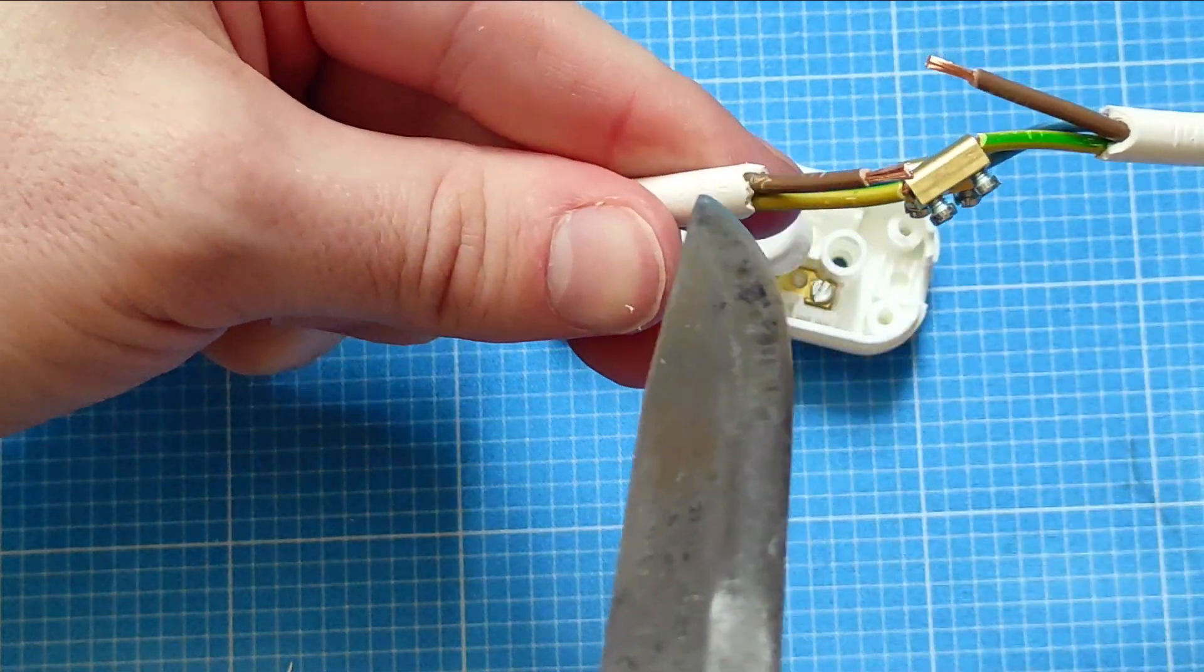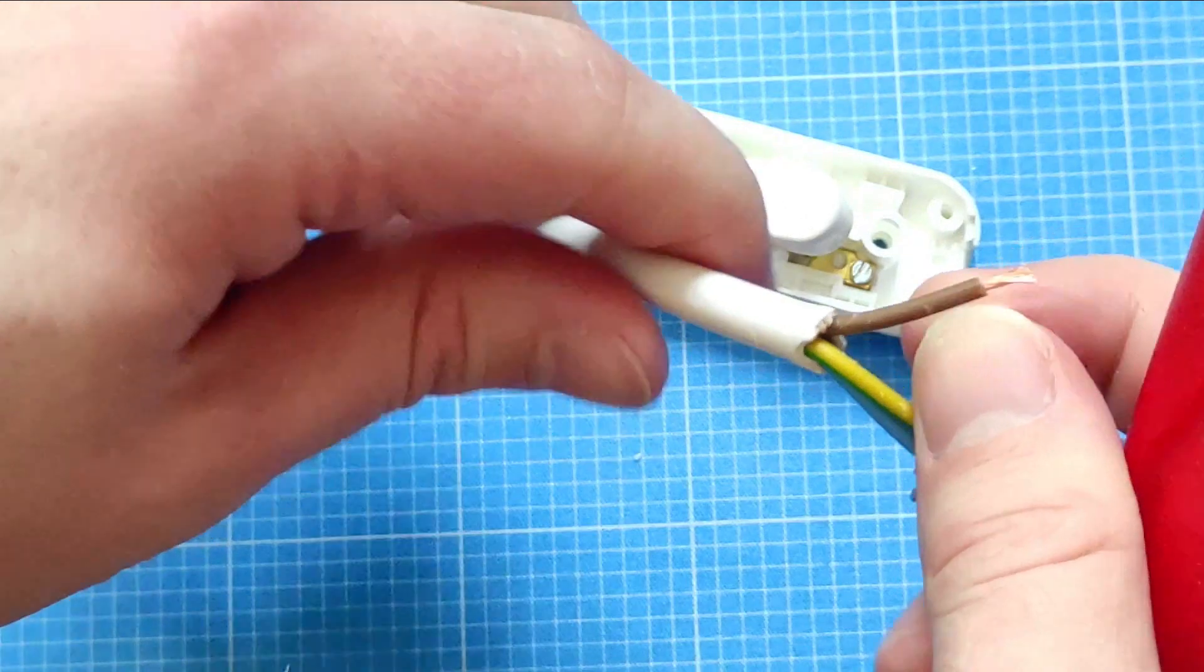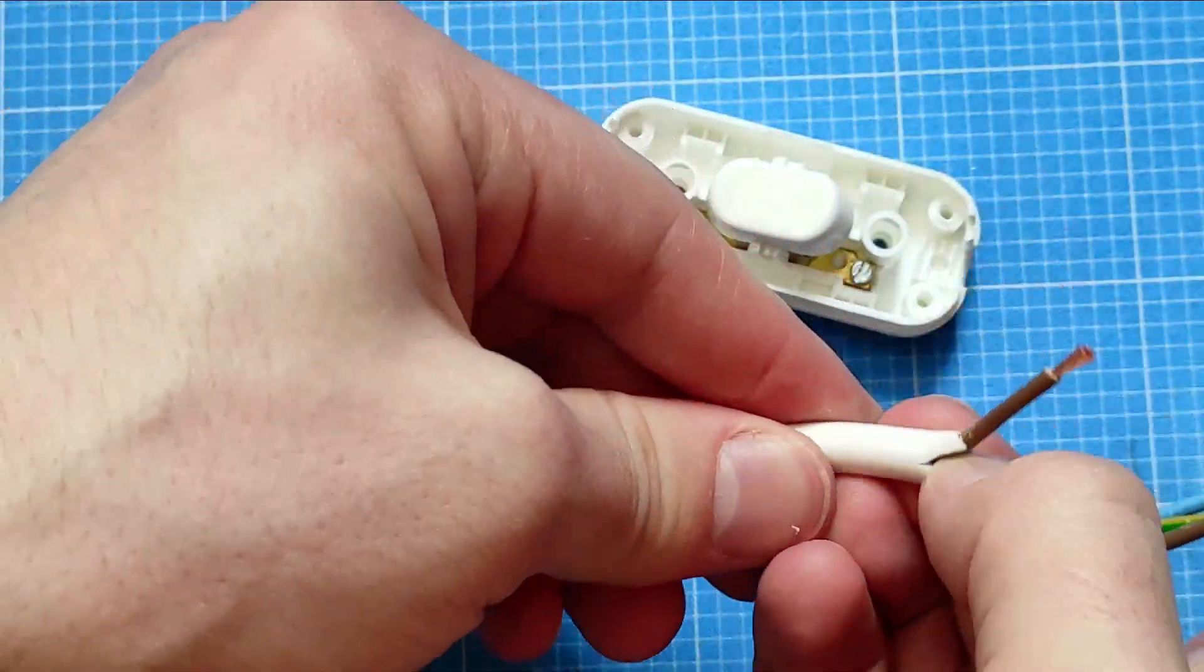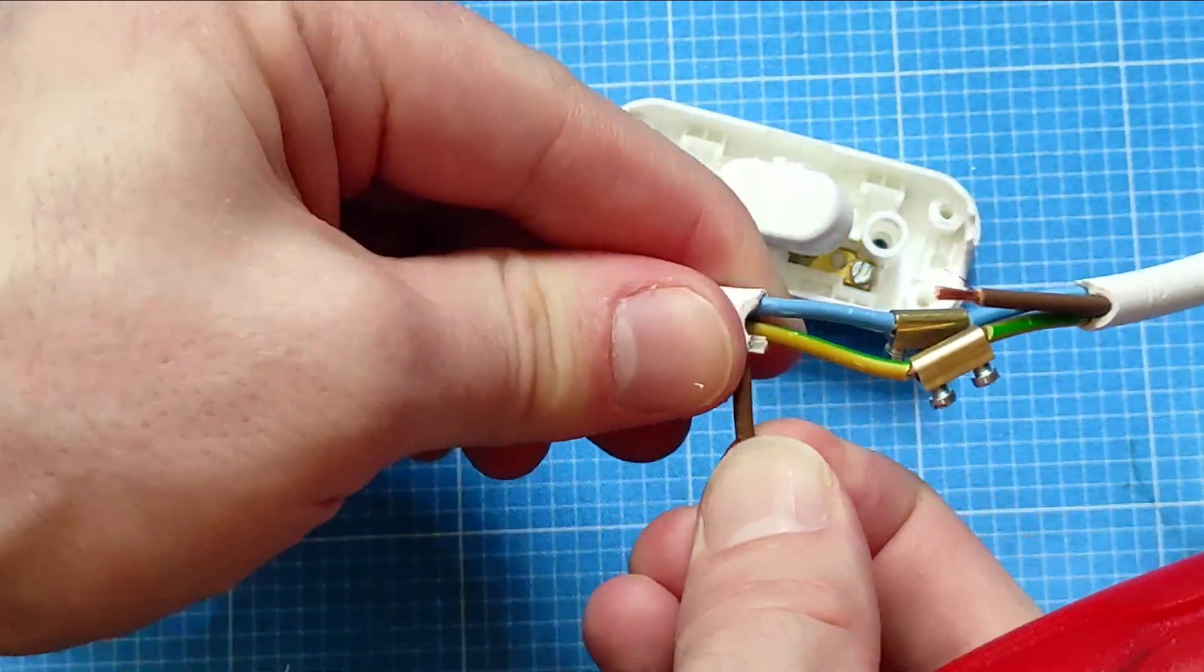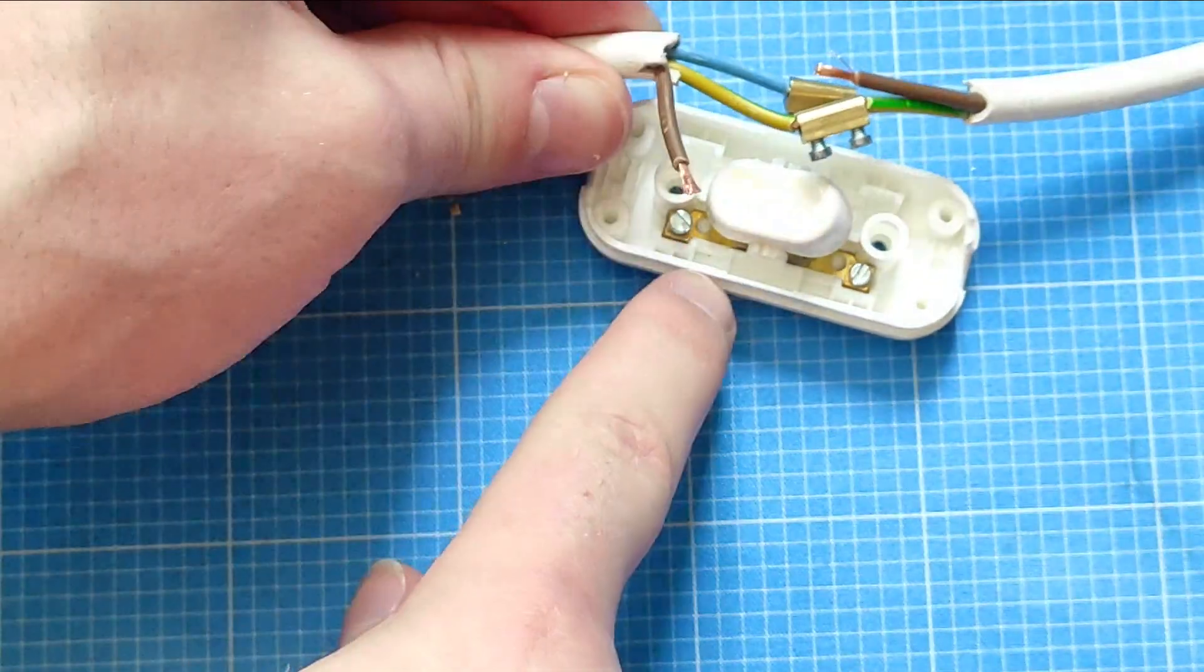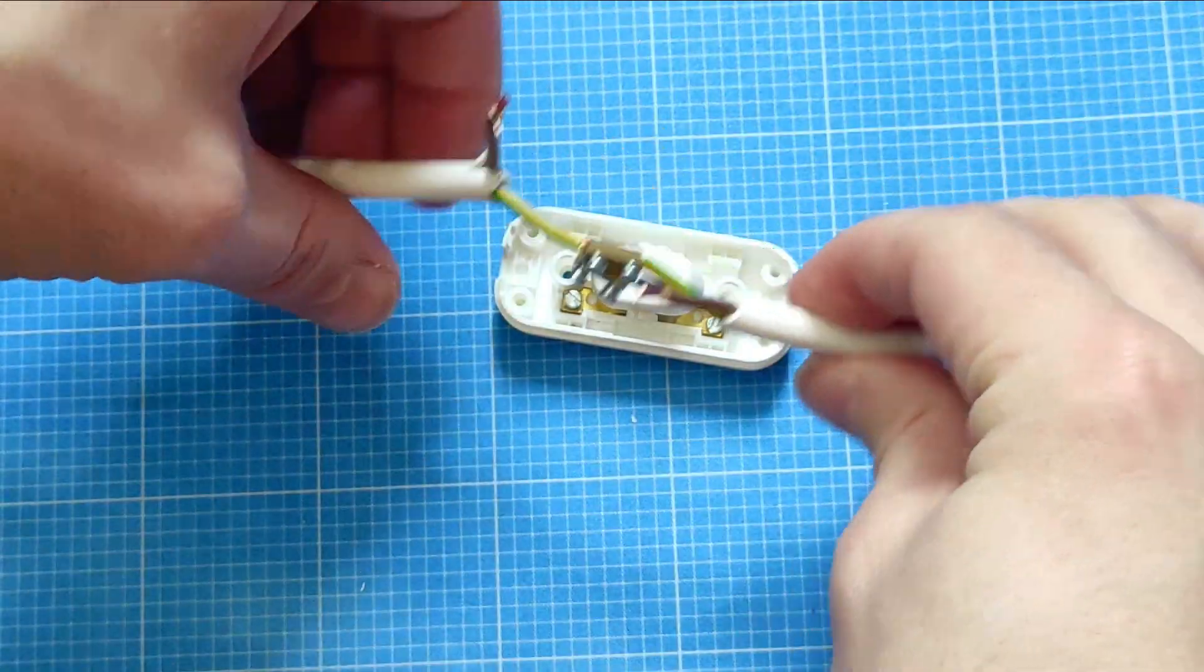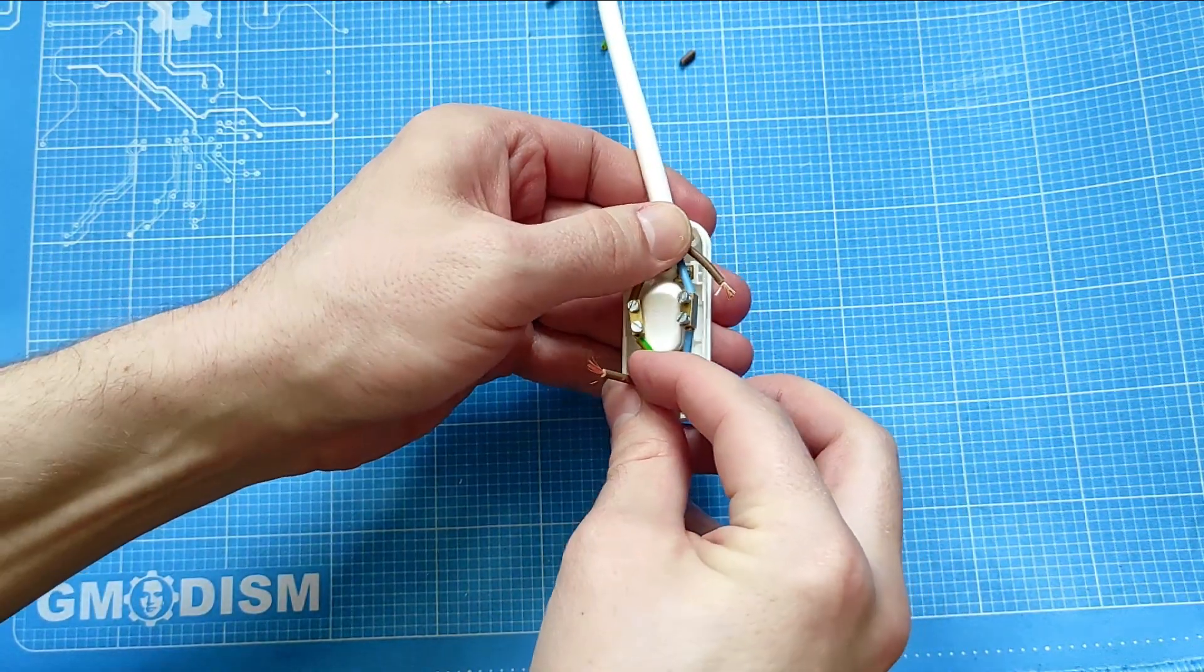But if you need like an extra half centimeter, what you can do is you can carefully cut between two of the cables and cut a little bit from the inside. Make sure you don't damage any of the internal cables though. And then you can kind of use this to peel out an extra half a centimeter of the brown one, for example, to actually get the connection into the switch part there for the live wire. But that's only if you have to. So we can insert it here into the switch.